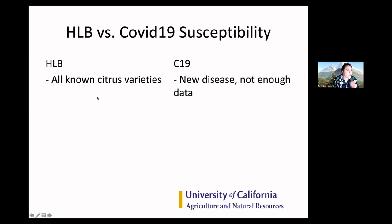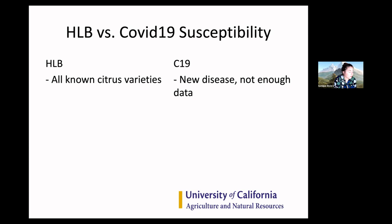When it comes to susceptibility, we know that HLB can affect all known citrus varieties. The most highly tolerant is the Australian finger lime — the caviar of citrus, great on salads. The Citrus Clonal Protection Program now sells Australian finger limes and UCR is developing more of those varieties. That peptide from last week, which they think will be a very strong treatment for HLB, is actually derived from Australian finger limes.